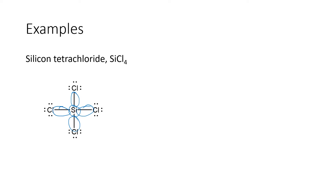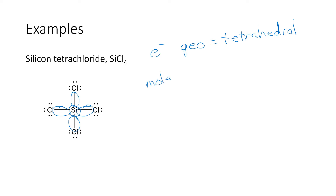If you look at the VSEPR chart for four domains, the electron geometry is tetrahedral. And since all of the domains are bonding — we have no lone pairs on the central atom — the molecular geometry or the shape is the same thing. It's also tetrahedral.